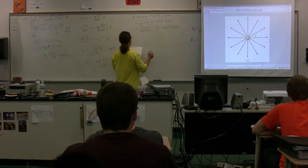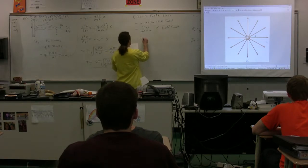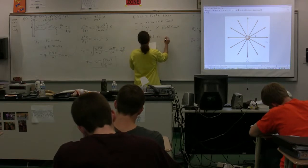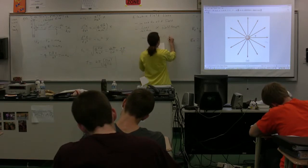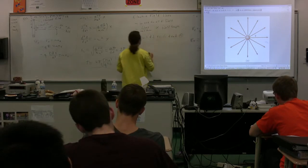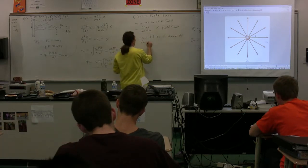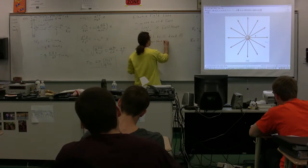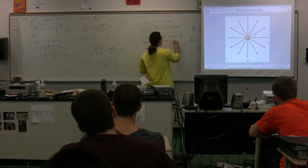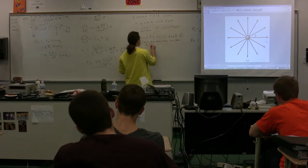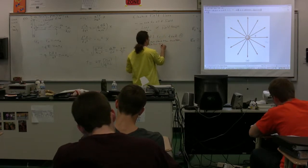They always start perpendicular to a positively charged object and end at a negatively charged object. If there is more of one charge than another, then some of the electric field lines go to infinity.